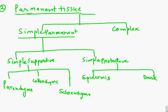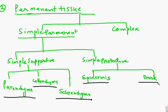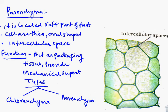The next is permanent tissue — the second type of plant tissue. Permanent tissue is further divided into two types: simple permanent tissue and complex permanent tissue. Simple permanent tissue is divided into simple supportive and simple protective. Simple supportive tissue is of three types: parenchyma, colenchyma, and sclerenchyma. Simple protective tissue includes epidermis and bark.